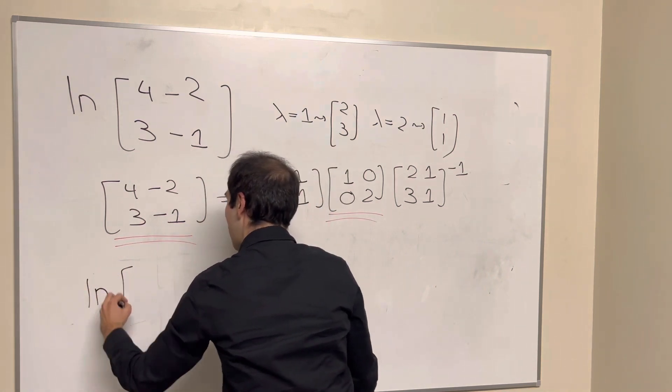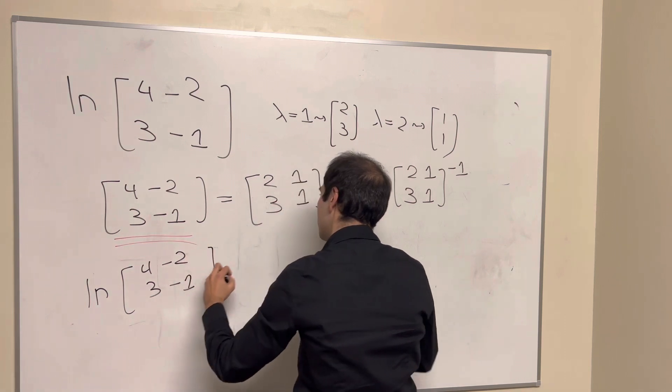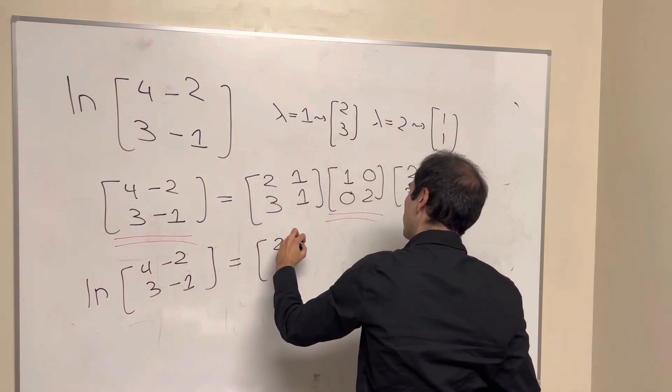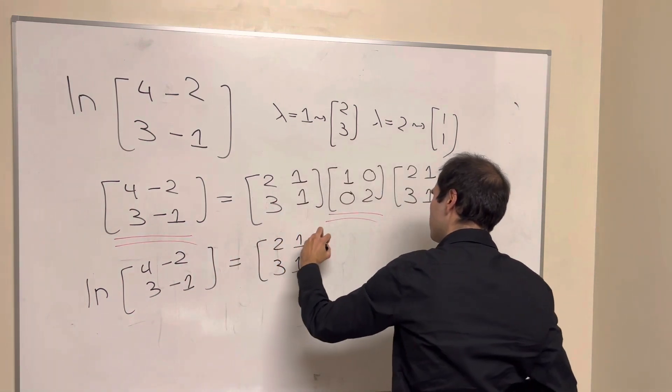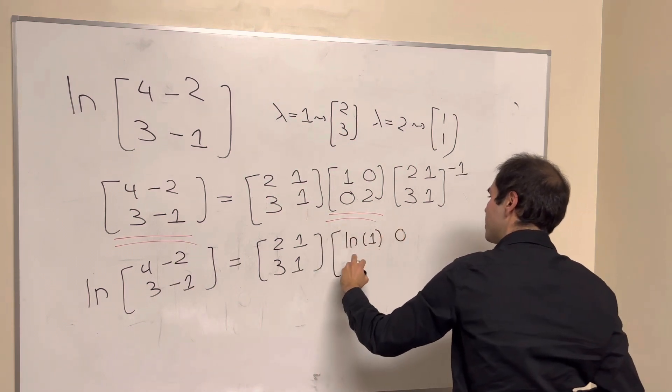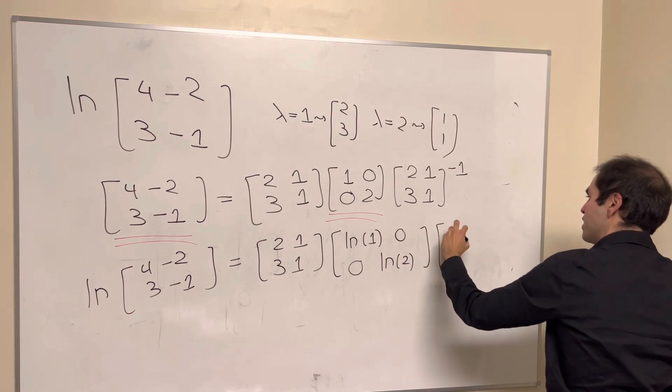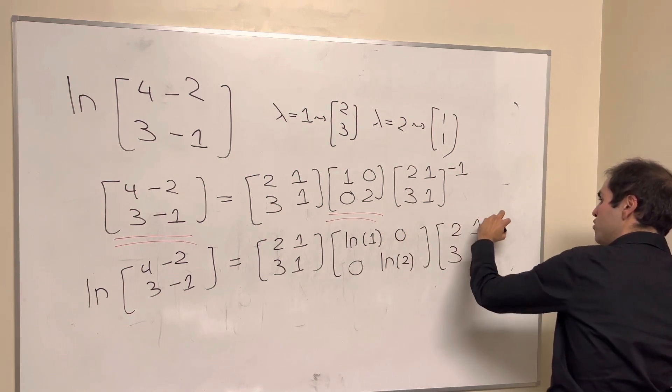So, if you want to calculate ln of this, 4 minus 2, 3 minus 1, it's still 2, 1, 3, 1, but now ln of 1, 0, 0, ln of 2, times the inverse of this matrix, 2, 1, 3, 1, inverse.